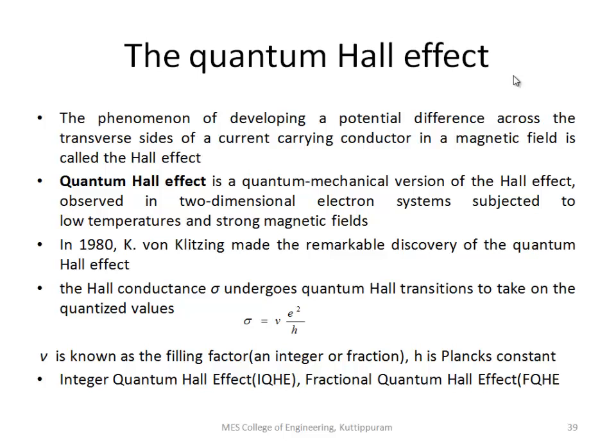The quantum version of this Hall effect is termed as quantum Hall effect. It is commonly observed in a two-dimensional electron structure and that experiment should be carried out at very low temperature and at very high magnetic field. So these are the main conditions required to observe quantum Hall effect. The system should be at very low temperature and we need to apply a very high magnetic field and we need a two-dimensional electron system, that is 2DEG.